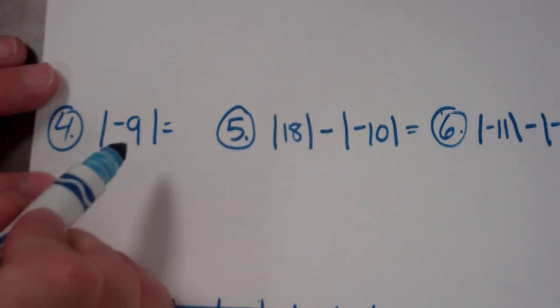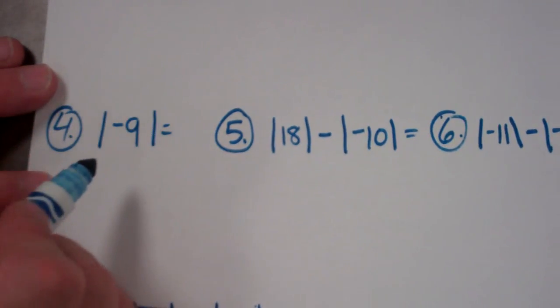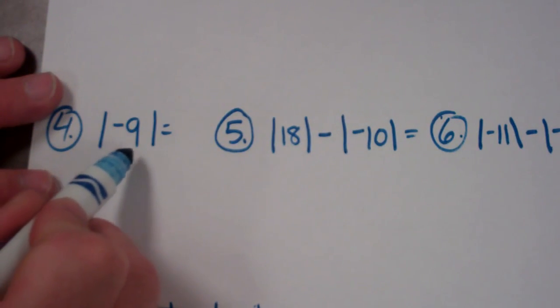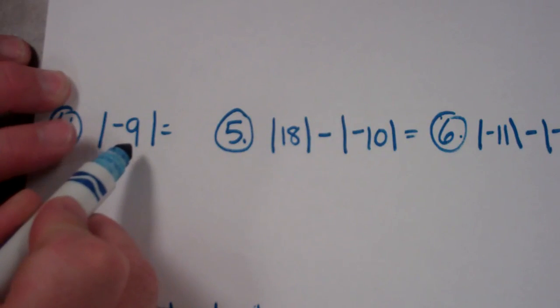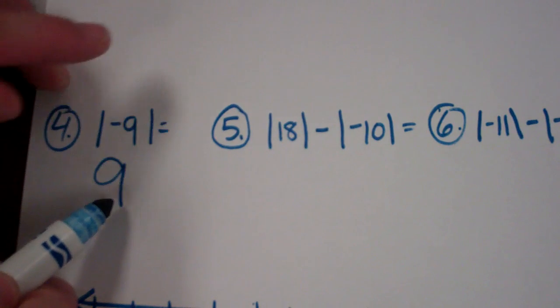Number four, what do the bars around a number mean? Remember? Hopefully we do remember. And we know that they mean absolute value. How far is negative 9 from zero? It's 9 away from zero. Always expressed as a positive.